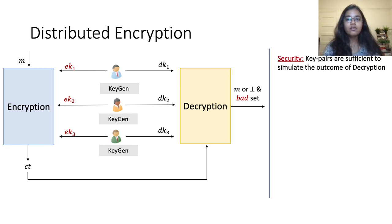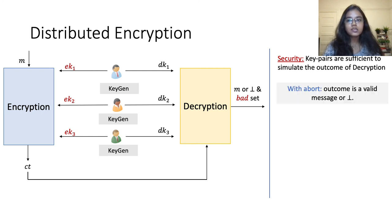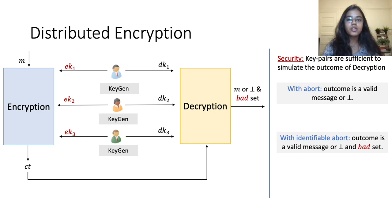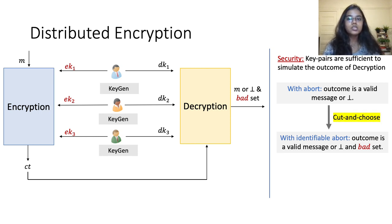We need one-time security as long as at least one of the key pairs is honestly generated. In addition to privacy, we require different flavors of correctness which hold even against active adversaries that corrupt some of the keys. The first is security with abort, where the decryption algorithm either outputs the correctly decrypted message or outputs abort. We want that just by looking at the key pairs, we should be able to predict whether the outcome will be a valid message or abort. Similarly, for security with identifiable abort, we want that given only the key pairs, we should be able to predict whether the outcome will be a valid message or abort along with the correctly identified subset of bad parties.